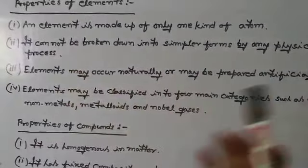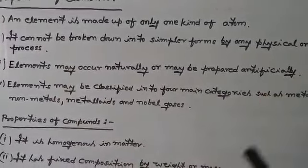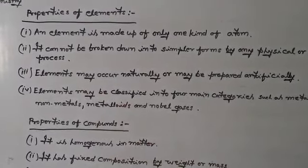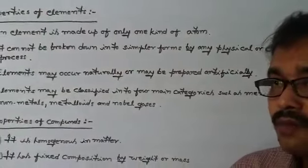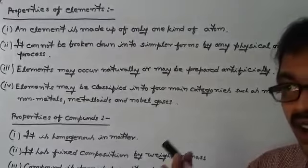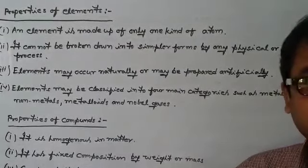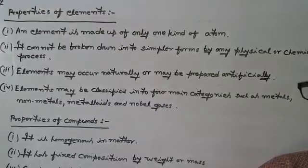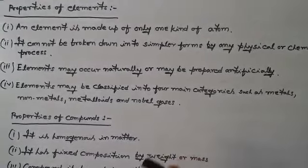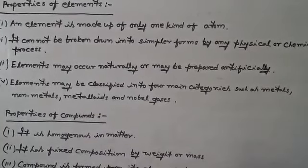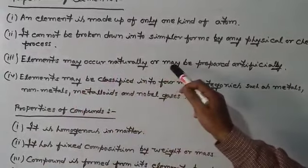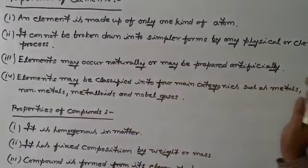That means the elements are the fundamental things with which all matters of the universe consist of. Third, all elements may occur naturally because most of the elements, that is 90 percent, 90 number of elements exist in nature on their own, and the rest, 30 elements which actually do not exist in nature on their own, exist in labs or places where conditions are provided. That means elements may occur naturally or may be prepared artificially in labs.